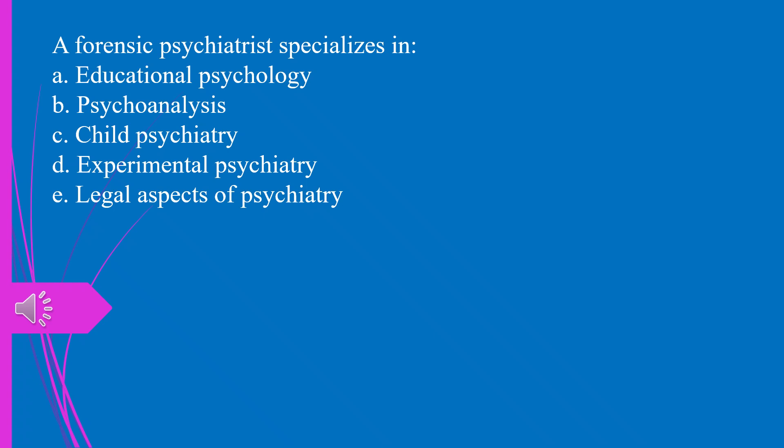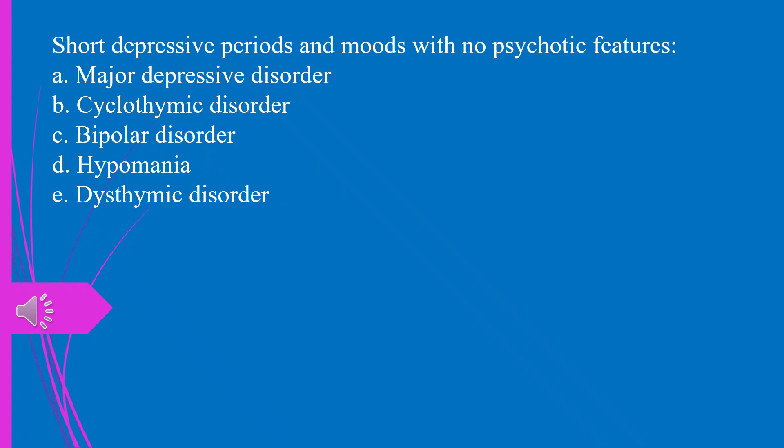Question 48. A forensic psychiatrist specializes in: a) educational psychology, b) psychoanalysis, c) child psychiatry, d) experimental psychiatry, e) legal aspects of psychiatry. The answer is e, legal aspects of psychiatry.